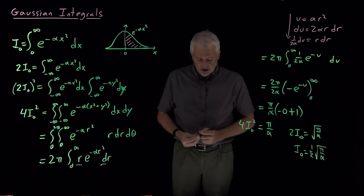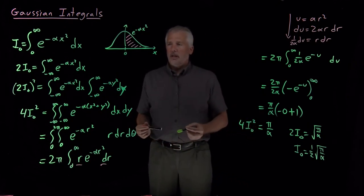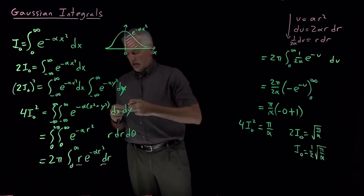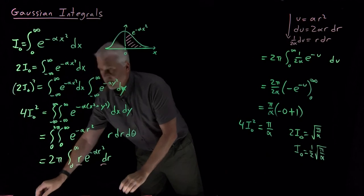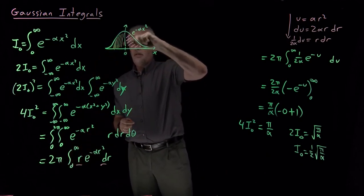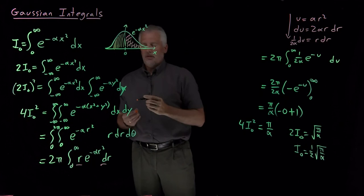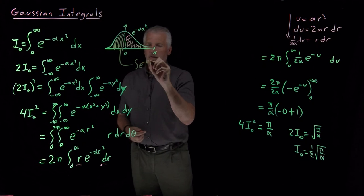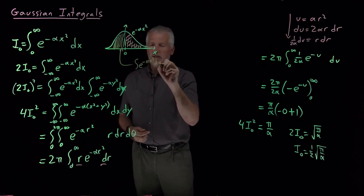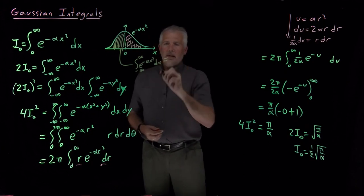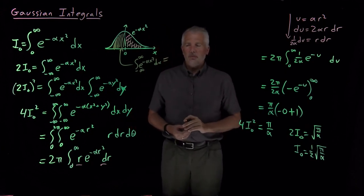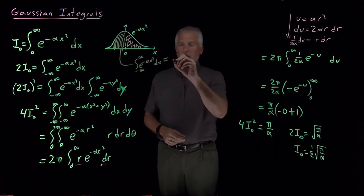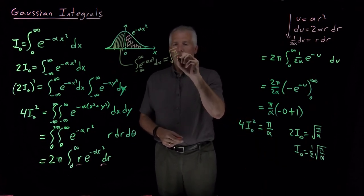Just as commonly, if we're interested in the area under the full integral, that full area, in other words integral of e to the minus alpha x squared dx from negative infinity all the way to infinity, that's actually the problem we run into most often. That full area under this Gaussian curve is twice the area under half the curve, so that's just square root of pi over alpha.